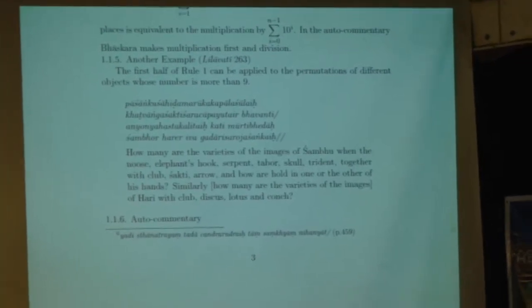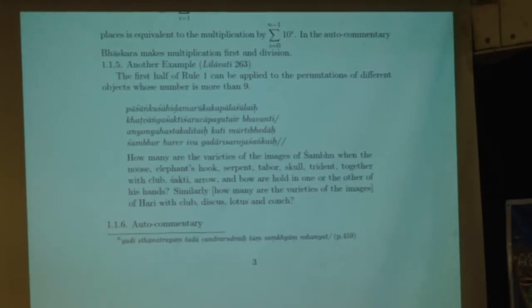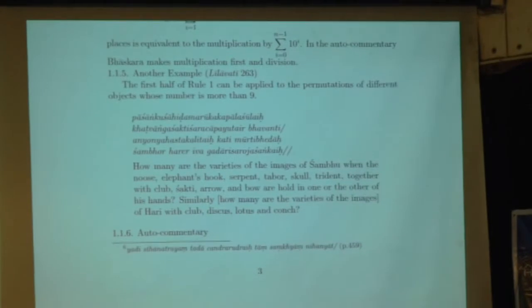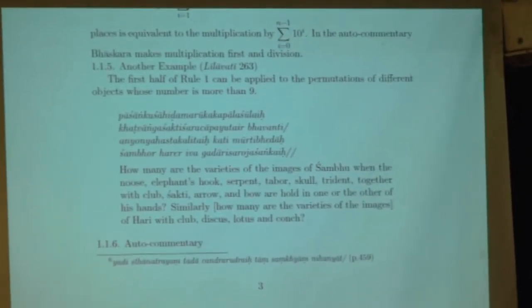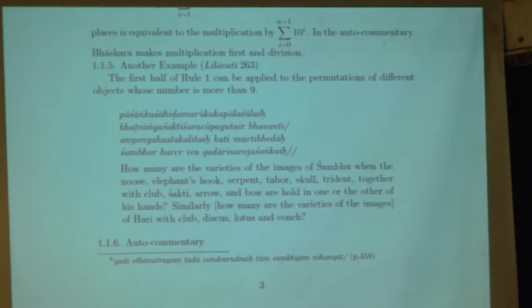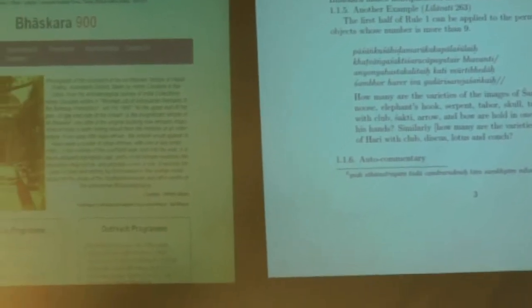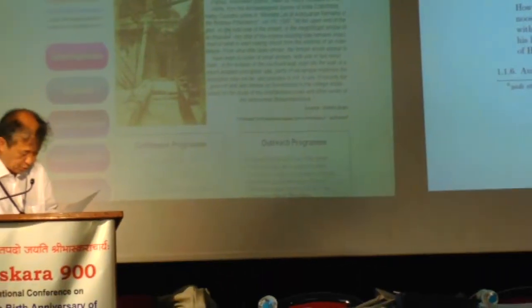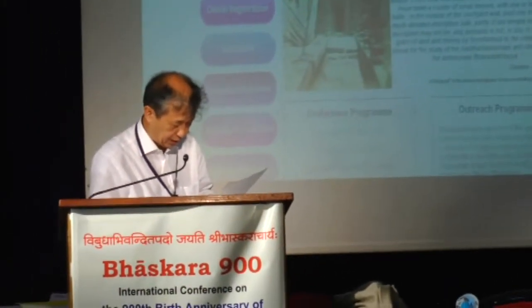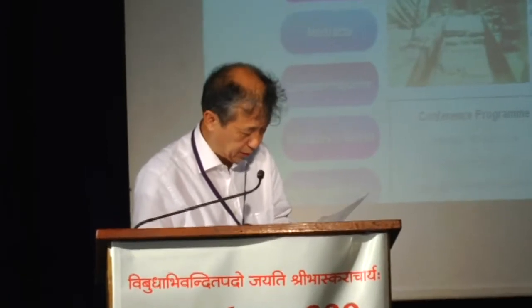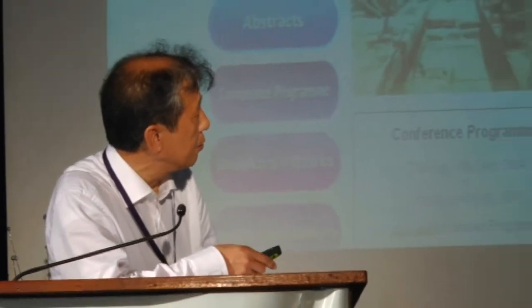Another example: the first half of Rule 1 can be applied to permutations of different objects whose number is more than ten. How many are the variations of the images of Shambu when the noose, elephant hook, hawk, serpent, ladle, skull, trident, together with the club, shakti, arrow, and bow are arranged in one or the other of his hands? Similarly, how many are the varieties of images of Hari with the crab, discus, lotus, and conch? The number of images of Shambu is a certain large number, and those of Hari another.